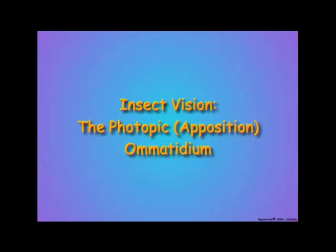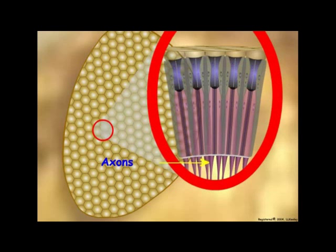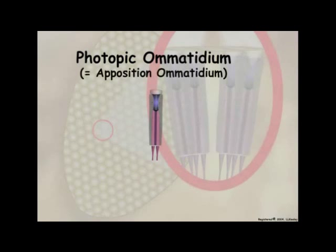In their compound eyes, the photopic ommatidium was earlier called an apposition ommatidium because the base of the crystalline cone is in direct contact, or in apposition, to the rhabdom.